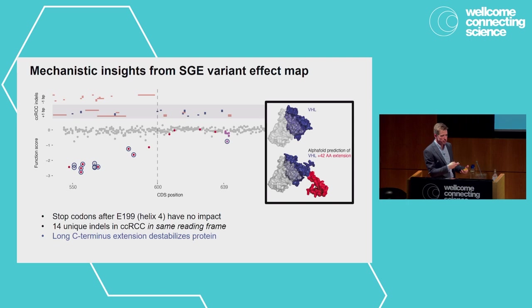We think this particular reading frame leads to a very long 42-amino-acid extension that we've modeled on the protein. It's that long C-terminal extension that is destabilizing the protein and leading to loss of function — a reading frame-specific effect nicely highlighted by showing exactly where nonsense mutations no longer matter. We validated this by looking at indels in this region, and when we create random indels by CRISPR cutting, we can confirm this is a reading frame-specific effect.